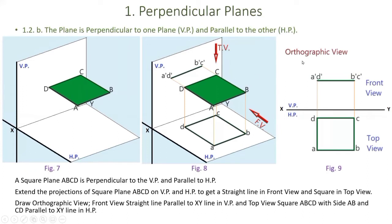Converting to orthographic view: the front view is a straight line, line AB or DC, parallel to the XY line. We measure the distance of point A from the reference line XY, copy that dimension, and draw a straight line parallel to XY to get the front view. For the top view, we measure the distance of point D from the reference line and the distance of point C, copy these dimensions, and draw a rectangle with side DC parallel to the XY line to get the top view.